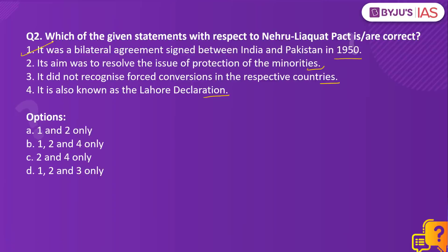Statement 1 is correct because this was signed between the then Prime Minister of India, Jawaharlal Nehru, and his counterpart from Pakistan on the 8th of April 1950. This period saw India and Pakistan facilitating a transfer of populations, rationalizing bilateral ties after the violence of partition. The main aim was to resolve the issue of protection of minorities and it drafted a framework for treatment of minorities in both countries. Therefore statement 2 is also correct. Statement 3 is also correct because this pact did not recognize forced conversions in both countries.